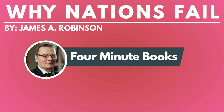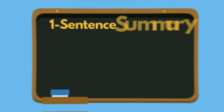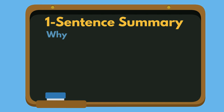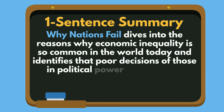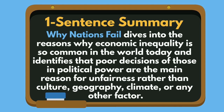Why Nations Fail by James A. Robinson. Summary from 4-Minute Books, written by Luke Rowley and read to you by John B. One sentence summary: Why Nations Fail dives into the reasons why economic inequality is so common in the world today and identifies that poor decisions of those in political power are the main reason for unfairness.